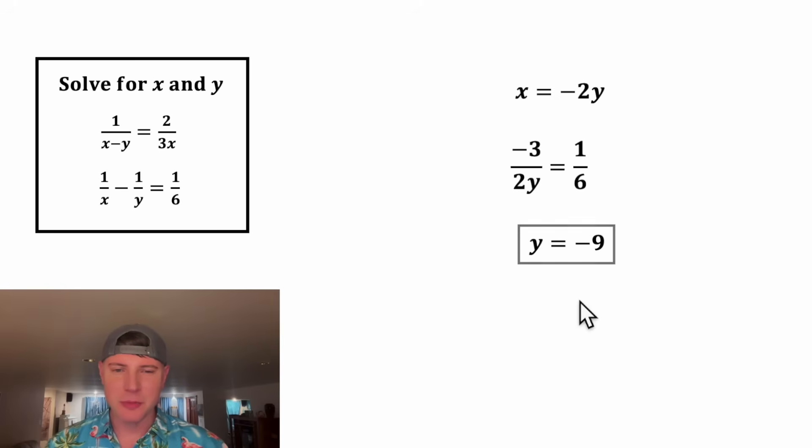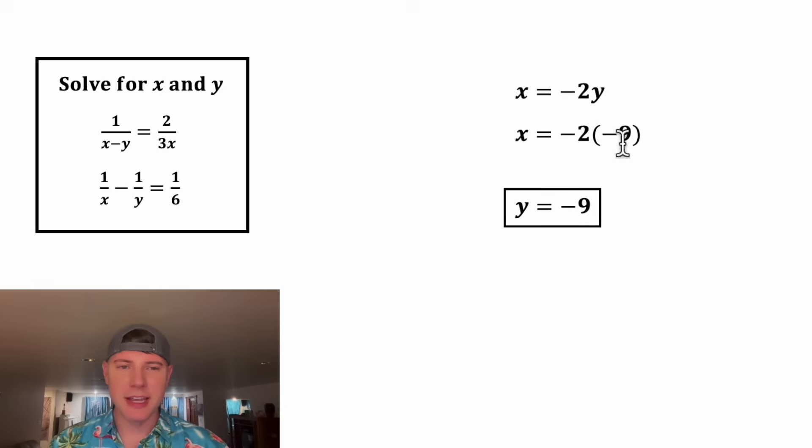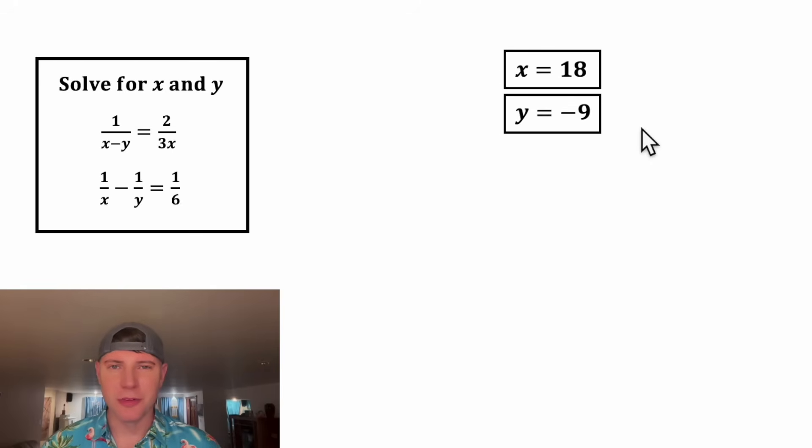This looks important, so let's put a box around it and move it up here. In the place of this y, we can plug in negative 9. So x equals negative 2 times negative 9, which equals positive 18. That's our answer for x. Let's put a box around it. This is the solution to our system of equations.